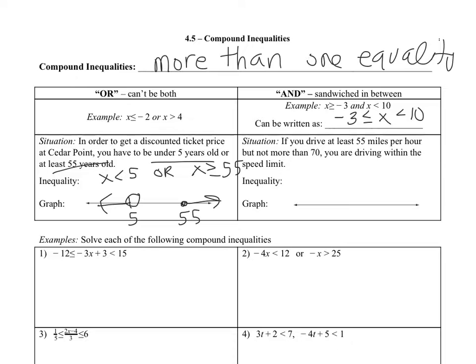If you drive at least 55 miles per hour but not more than 70, you are driving within the speed limit. This is going to be an in-between because you can drive between these and including the end points. So at least 55, so your lower limit is 55, at least means it includes it, and your upper limit is 70. Both of these have closed dots and you're going to shade in between.